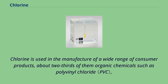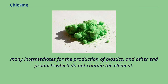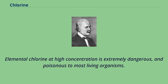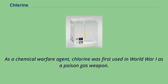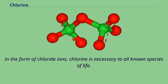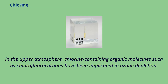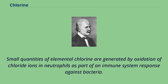Chlorine is used in the manufacture of a wide range of consumer products, about two-thirds of them organic chemicals such as polyvinyl chloride, and other end products which do not contain the element. As a common disinfectant, elemental chlorine and chlorine-generating compounds are used in swimming pools to keep them sanitary. Elemental chlorine at high concentration is extremely dangerous and poisonous to most living organisms. As a chemical warfare agent, chlorine was first used in World War I as a poison gas weapon. In the form of chloride ions, chlorine is necessary to all known species of life. Other types of chlorine compounds are rare in living organisms, and artificially produced chlorinated organics range from inert to toxic. In the upper atmosphere, chlorine-containing organic molecules such as chlorofluorocarbons have been implicated in ozone depletion. Small quantities of elemental chlorine are generated by oxidation of chloride ions in neutrophils as part of an immune system response against bacteria.